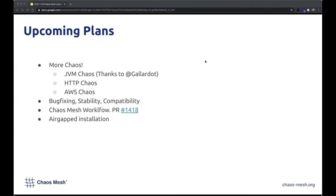We are also building HTTP Chaos as a transparent proxy — it can hijack HTTP requests and responses, make changes on them, or delay them for a while. And we are adding AWS Chaos, which allows Chaos Mesh to inject Chaos based on your AWS infrastructure, such as shutting down or restarting ECS instances and detaching EBS volumes.